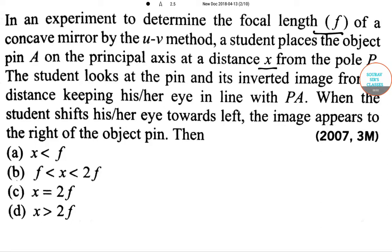The problem states that in an experiment to determine the focal length f of a concave mirror by the UV method, a student places the object pin A on the principal axis at a distance X from the pole P.